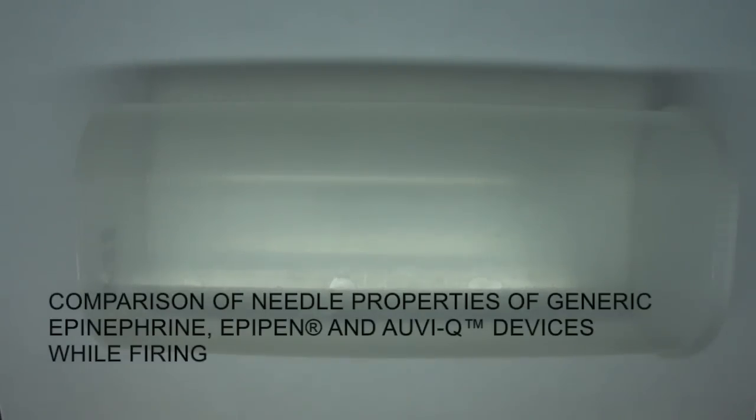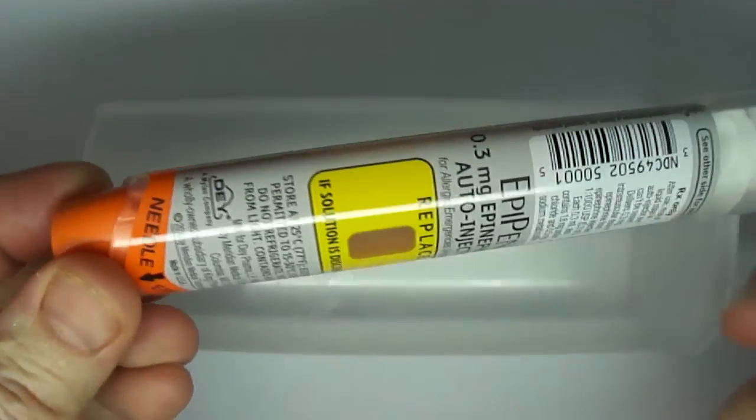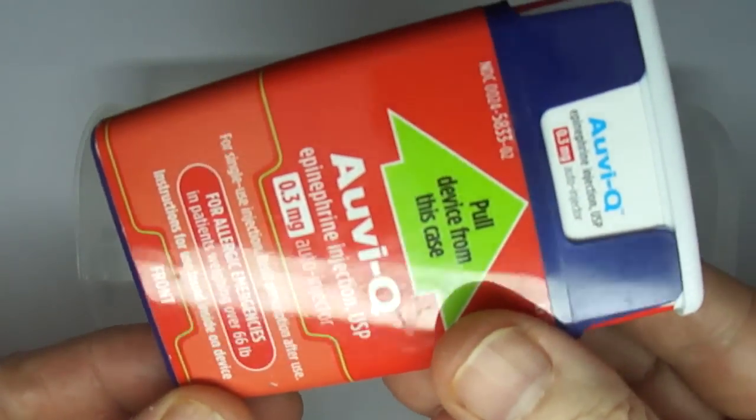I'm using this plastic container to show the difference between a generic device that doesn't have a needle cover, an EpiPen which has a needle cover, and an AviQ which has a self-retracting needle.